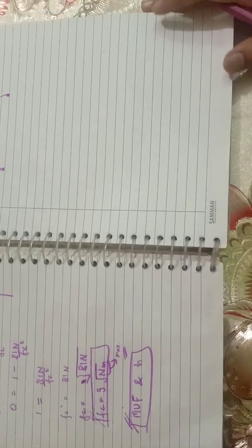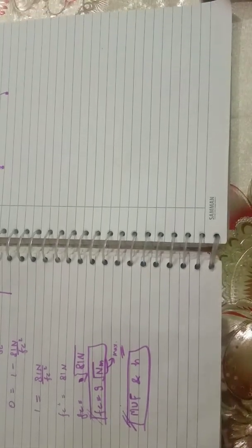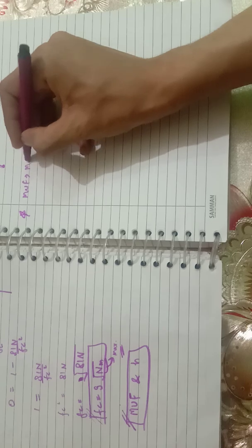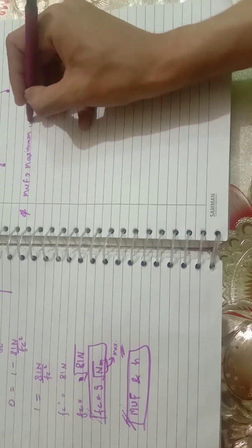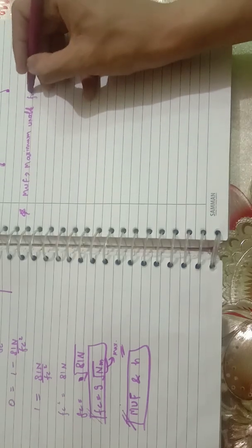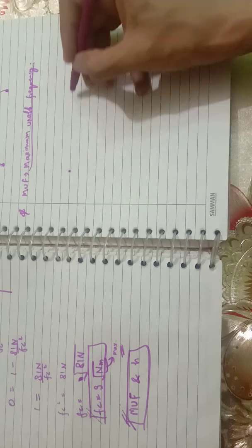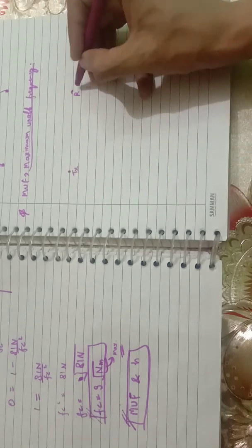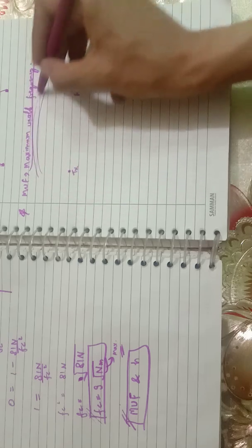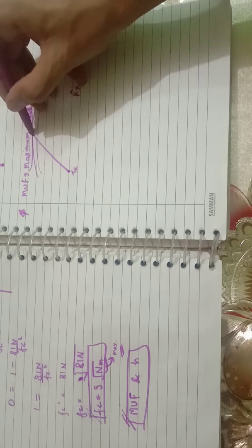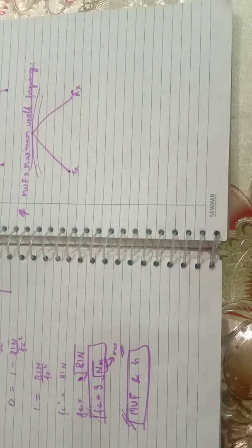Hello everyone, today we are going to discuss the MUF and the derivation of MUF. As we have earlier discussed the critical frequency, now we should know what MUF is. MUF is Maximum Usable Frequency. Let us suppose we have two points — a transmitter section and a receiver section — with an ionospheric layer. If we transmit a signal in skywave propagation with the help of TIR, it will get back to the same medium.